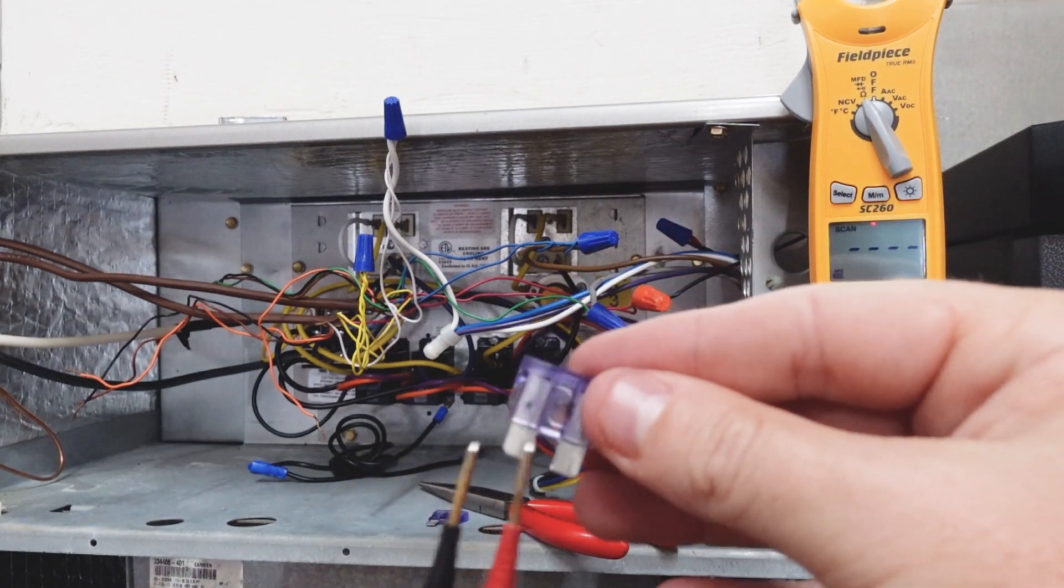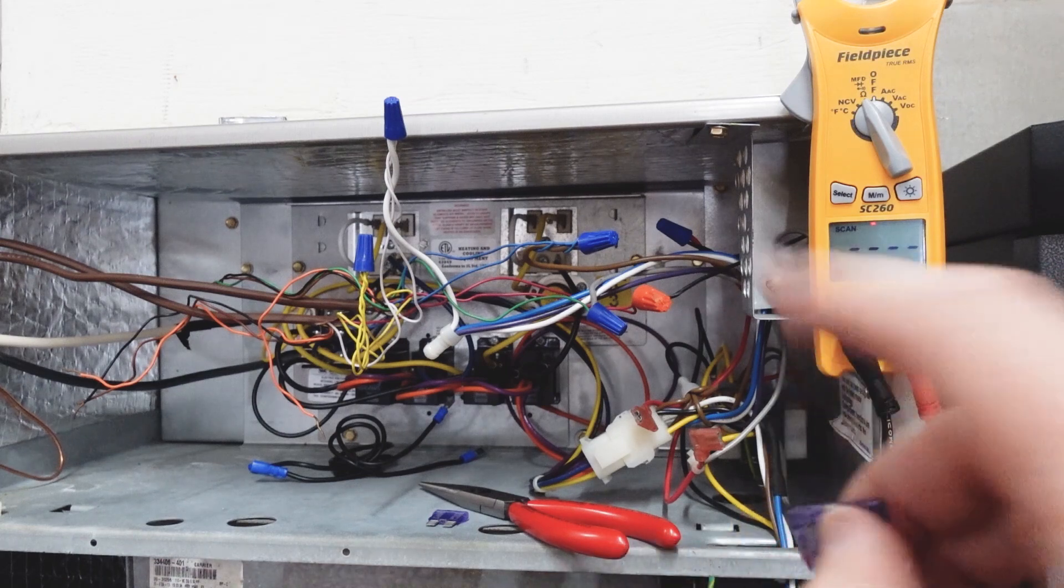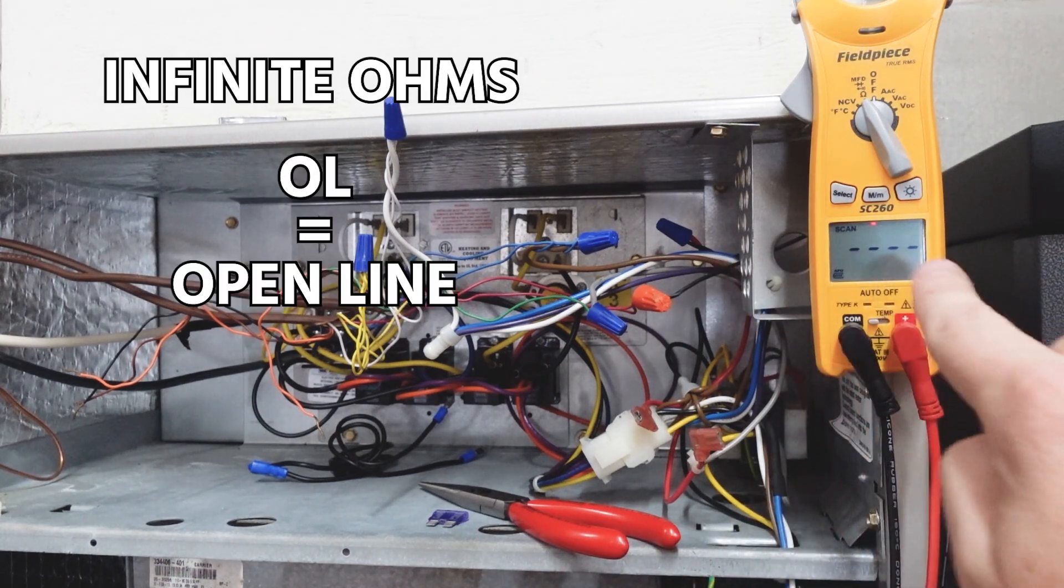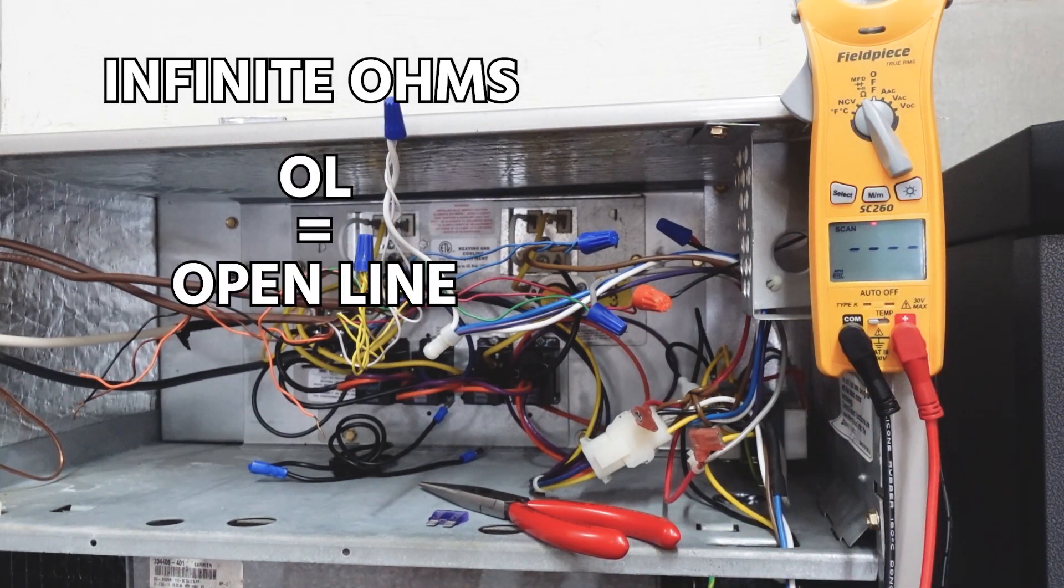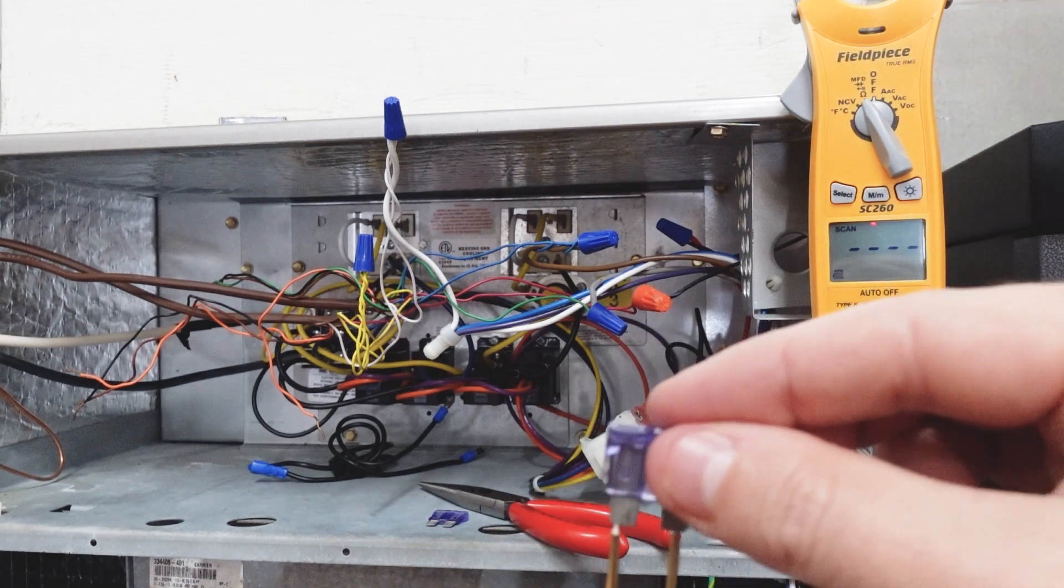But with a fuse that's blown, if we do the same measurement, we will not get a path, which is known as infinite ohms. Some meters will show OL here for open line. And in this case, this meter just shows dashes when there's an open path.